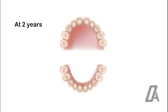At two years, the majority of children have 20 teeth clinically present. By two and a half years of age, the deciduous dentition is usually complete.